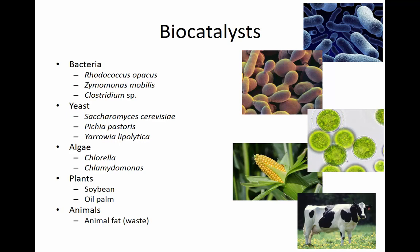Rhodococcus opacus makes triacylglycerols that can be converted to biodiesel. Zymomonas mobilis is a bacterium that produces ethanol. Clostridium species grow anaerobically and produce higher alcohols like butanol, as well as a little ethanol and acetone. Yeast — Saccharomyces cerevisiae — is well-known for ethanol production. Pichia pastoris and Yarrowia lipolytica both produce lipids that, like those of Rhodococcus opacus, can be converted to fatty acid esters that are biodiesel. Algae can be used to make ethanol, engineered to make butanol, and can also produce lipids that can be turned into biodiesel. Plants too — wood is the oldest biofuel, and soybean oil and palm oil can again be used to make biodiesel.